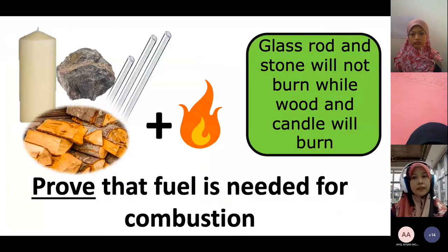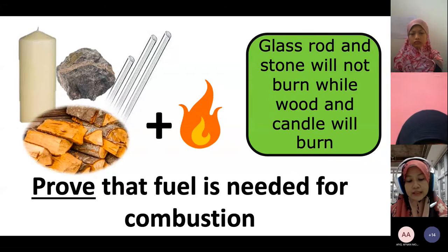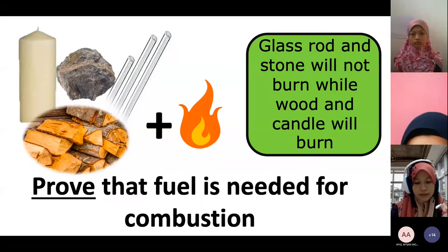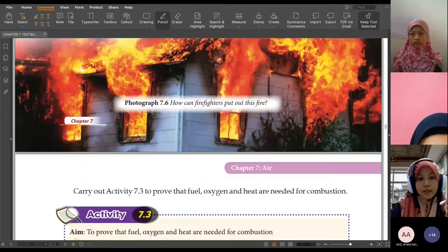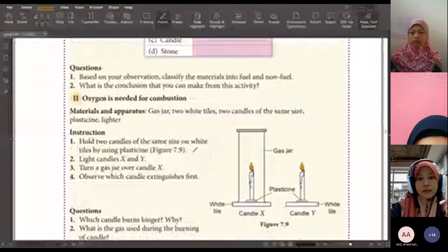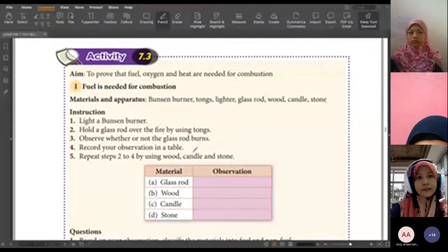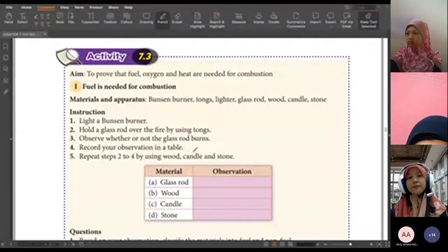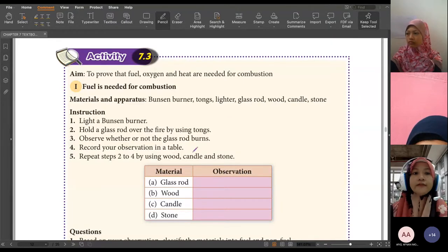Alright. So there is an activity and also experiment to prove that fuels, oxygen, and heat are needed for combustion. If you refer to your textbook, page 205, activity 7.3. In this activity we are going to prove that fuel, oxygen, and heat are needed for combustion.